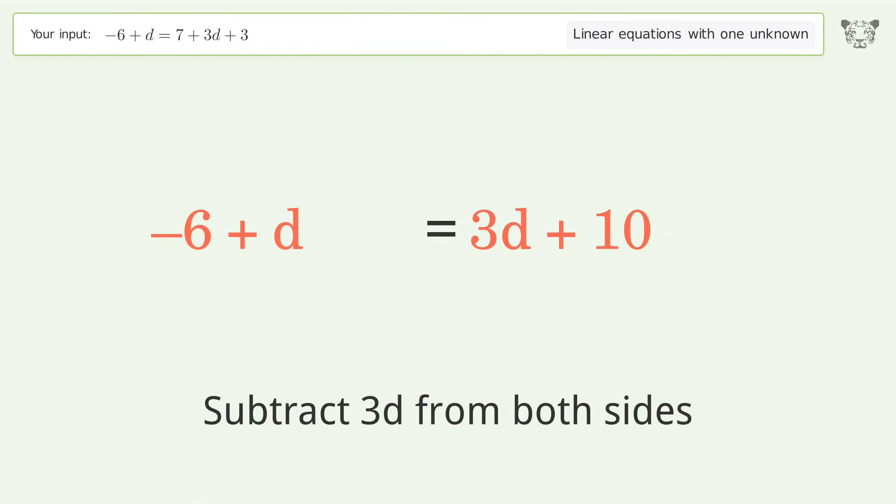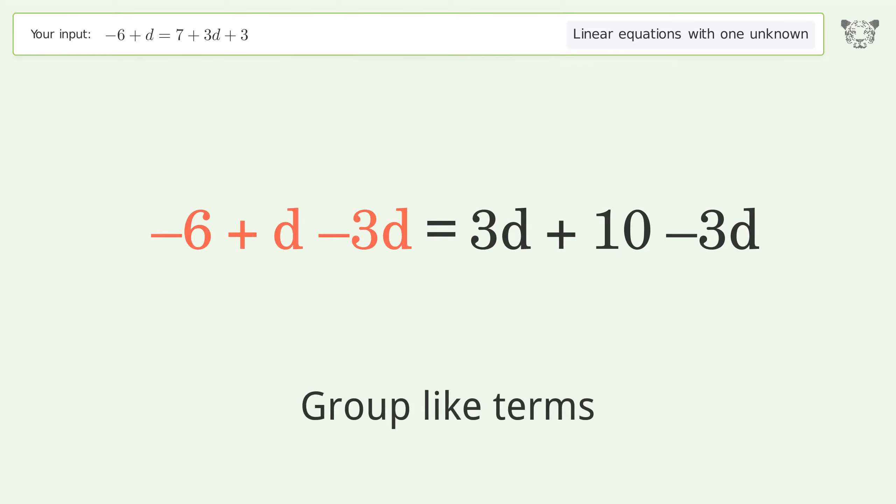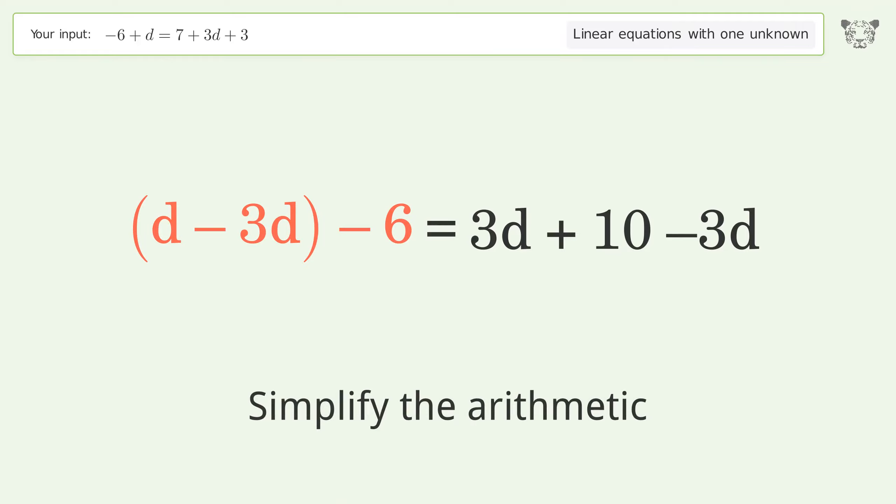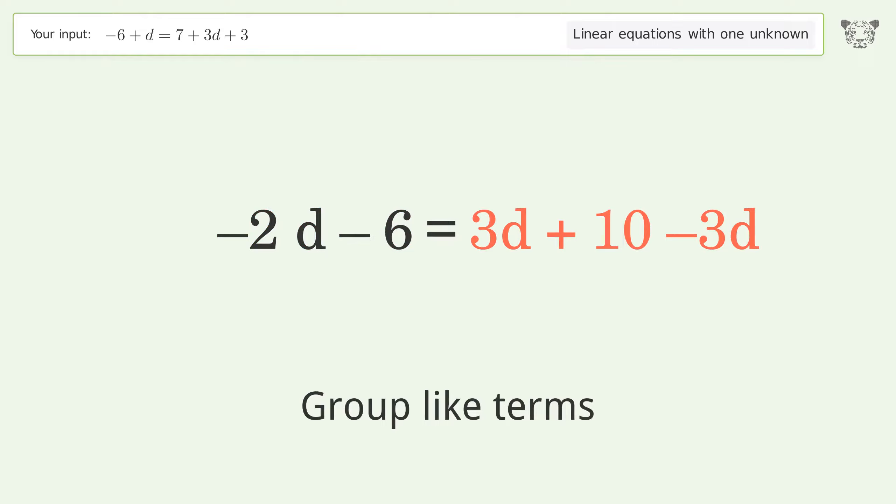Group all d terms on the left side of the equation. Subtract 3d from both sides. Group like terms. Simplify the arithmetic.